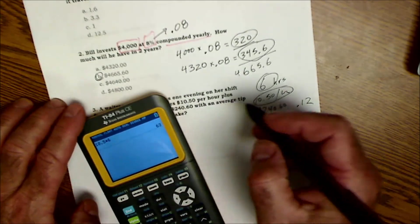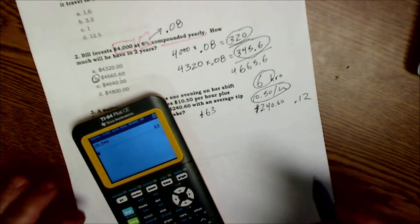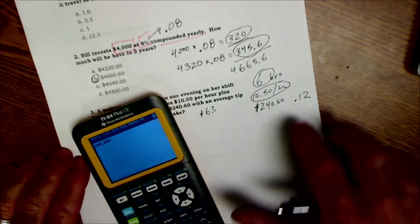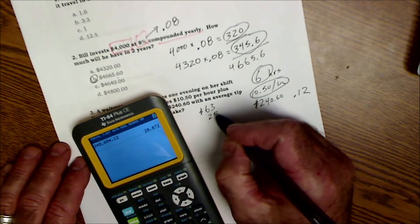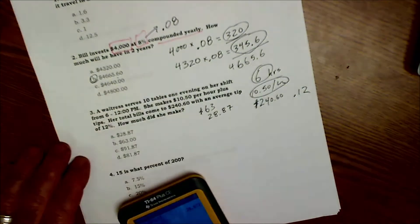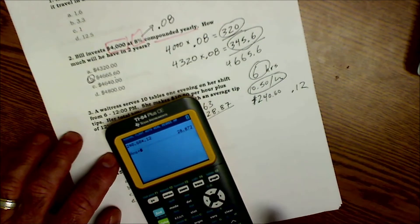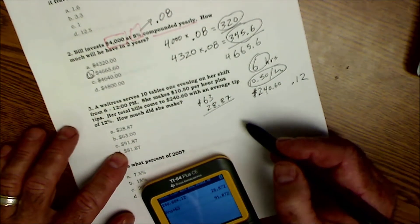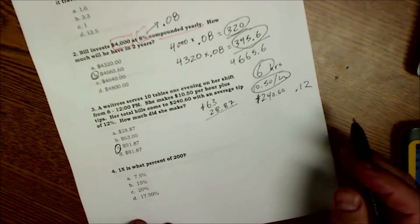And then she makes tips on $240. So I take the amount of sales, $240.60, times that 0.12, and I get $28.87 in tips. So her hourly rate is $63 and then her tips are $28. We're going to add those two things together, you get $91.87. And there it is right there, answer C.